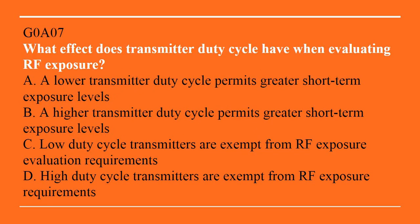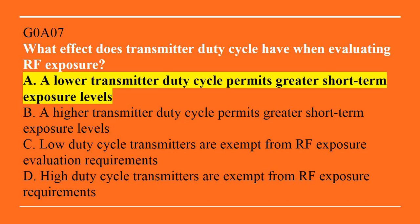G0A07: What effects does transmitter duty cycle have when evaluating RF exposure? A, lower transmitter duty cycle permits greater short-term exposure levels. B, a higher transmitter duty cycle permits greater short-term exposure levels. C, low-duty cycle transmitters are exempt from RF exposure evaluation requirements. Or D, high-duty cycle transmitters are exempt from RF exposure requirements. Correct answer is A — a lower transmitter duty cycle permits greater short-term exposure.